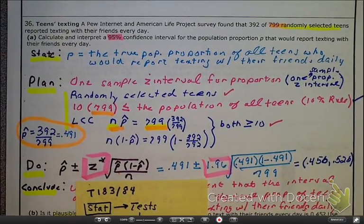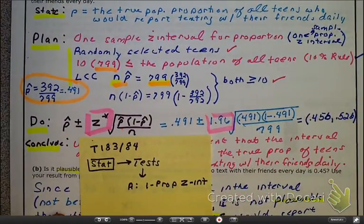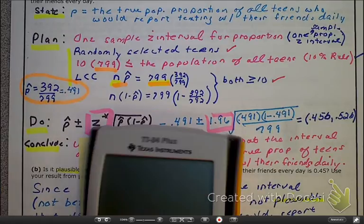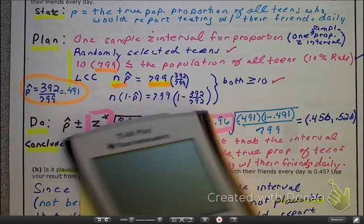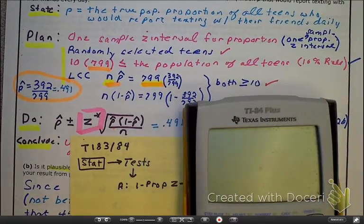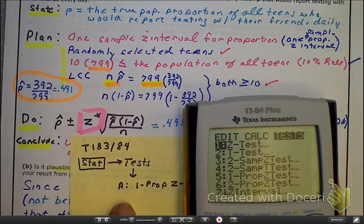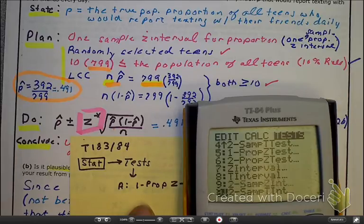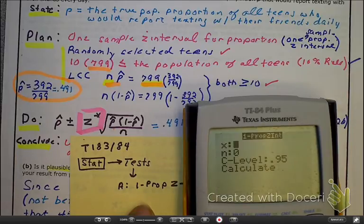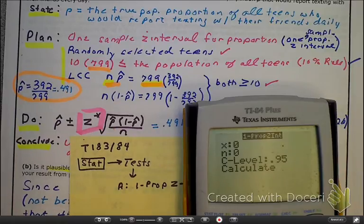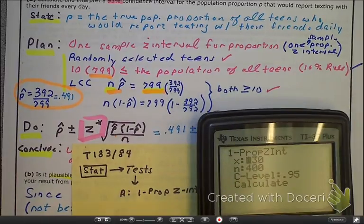Pull out your TI-83 or TI-84, whichever one you want. I'm going to be going back and forth with the calculator. Follow these directions: go over to STAT, go to TESTS, then go down to letter A or press letter A, then press enter. You'll notice that it is the same thing on the TI-83.